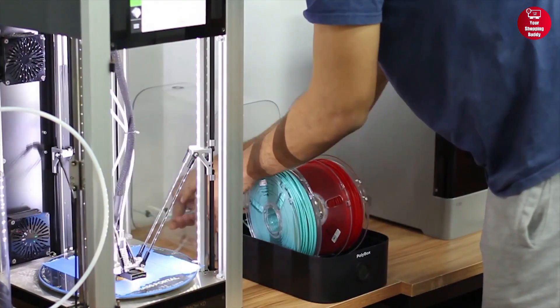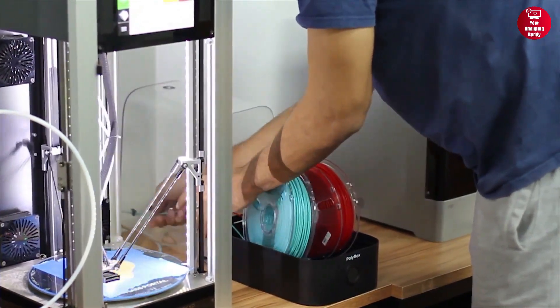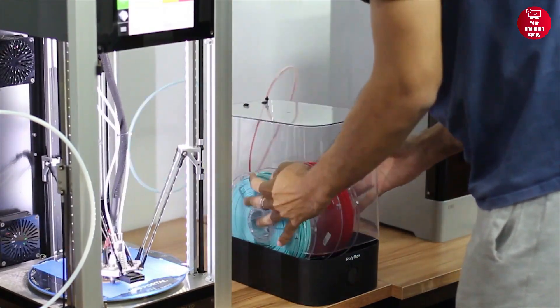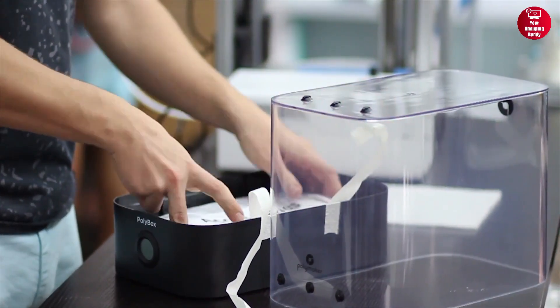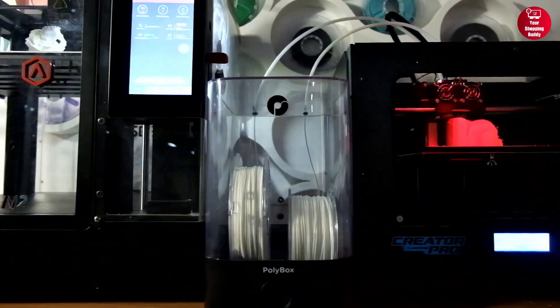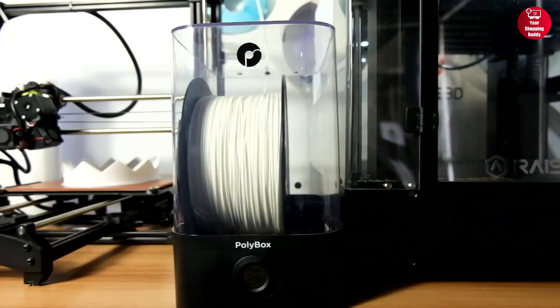it can be used in a variety of ways such as lowering the box to the printer or removing the lid while printing. So if you need a filament dryer to safely and efficiently store filament, the Polymaker Filament Storage Box can be a great choice.